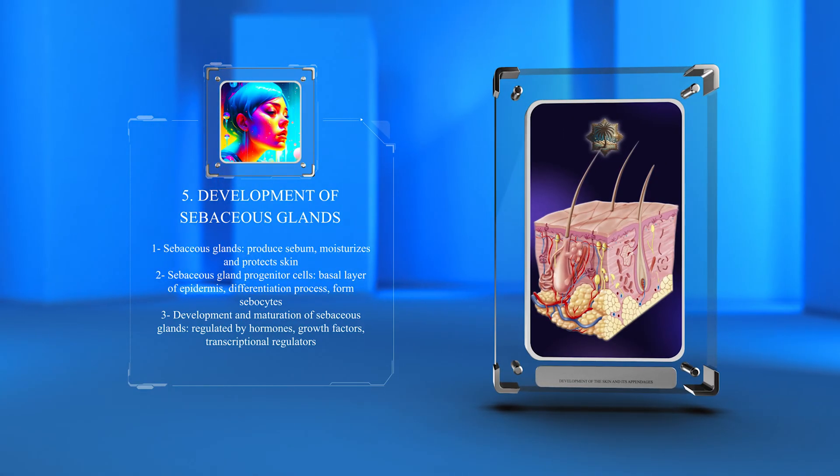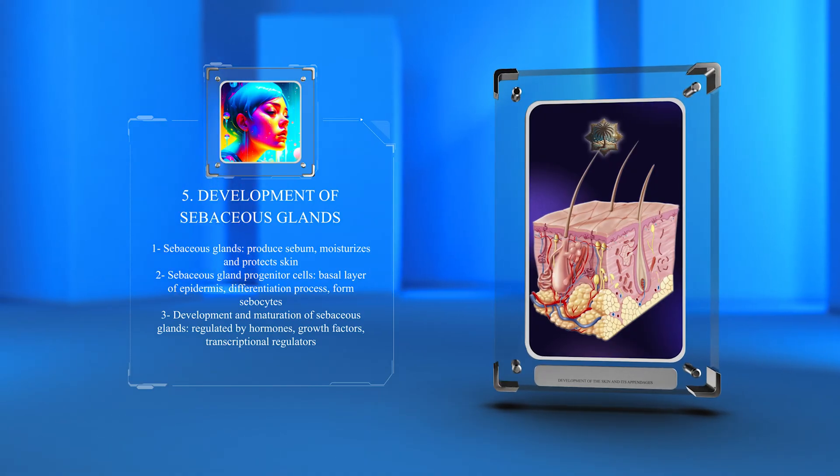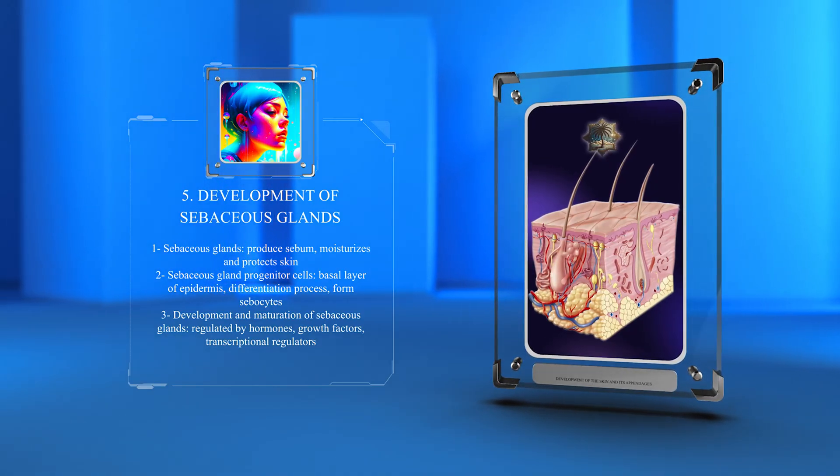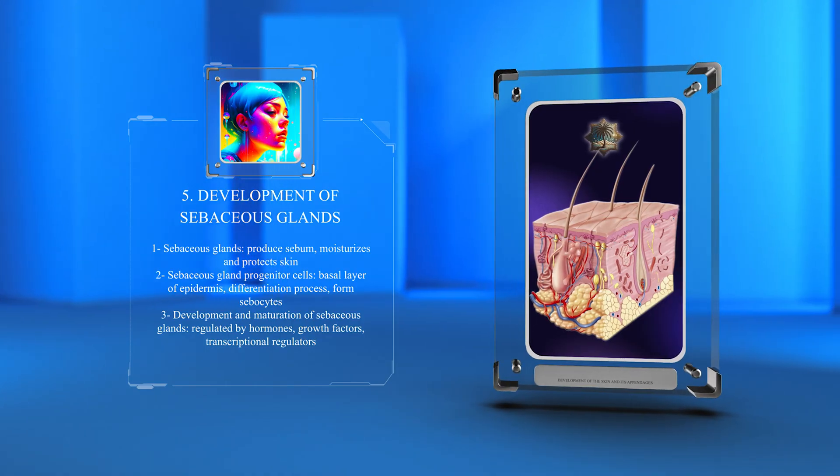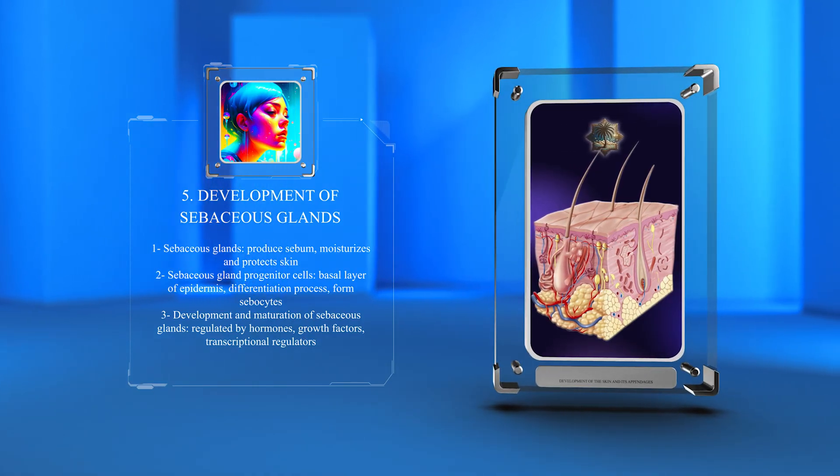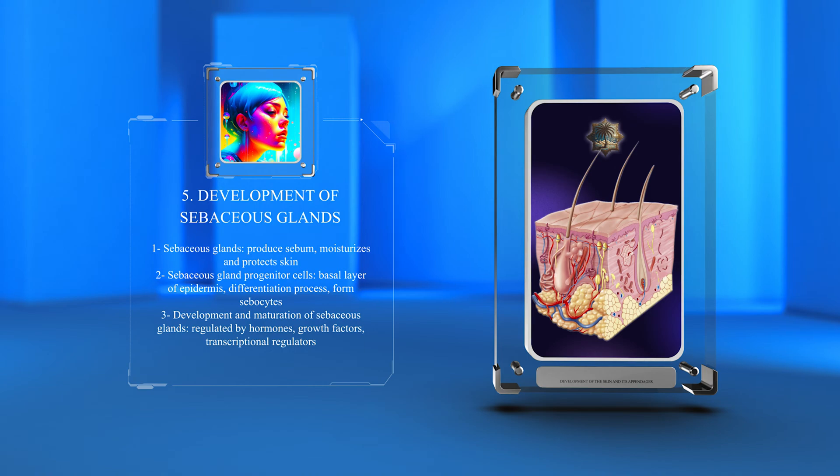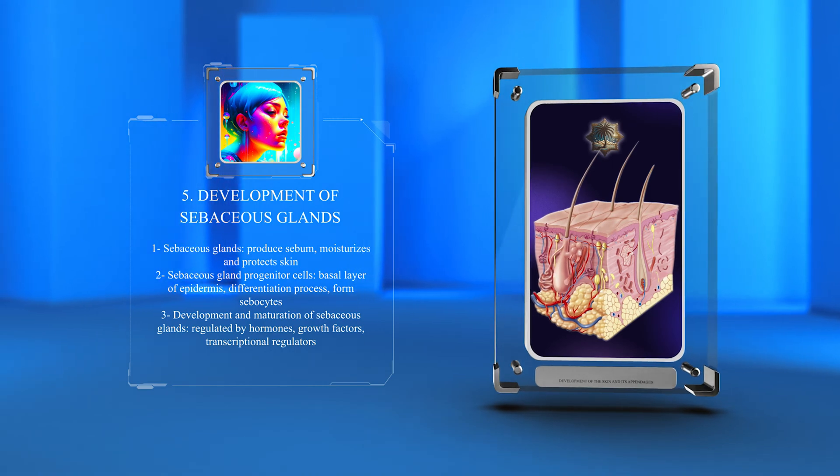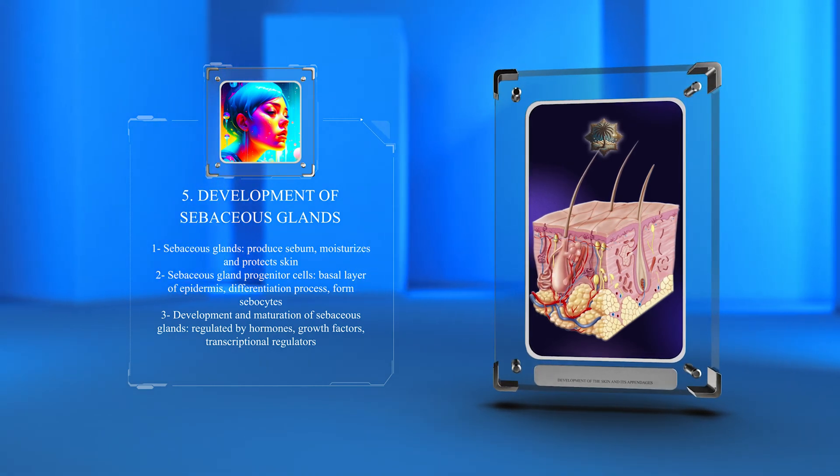Sebaceous gland progenitor cells arise from the basal layer of the epidermis and undergo a differentiation process to form sebocytes, which are the secretory cells of the sebaceous gland. The development and maturation of sebaceous glands are tightly regulated by factors such as hormones, growth factors, and transcriptional regulators.